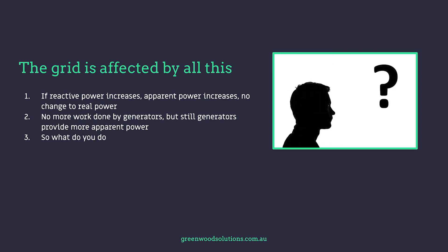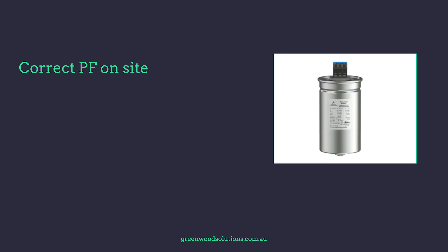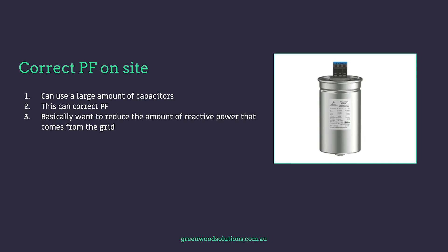So what do you do about this? One way is to correct the power factor on site. You can use a large amount of capacitors if it's a lagging power factor with inductive loads — this can correct the power factor. Basically, you want to reduce the amount of reactive power that comes from the grid, but you still need reactive power.